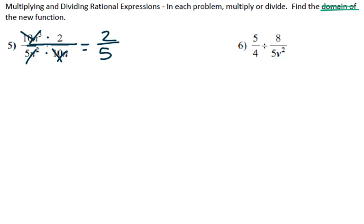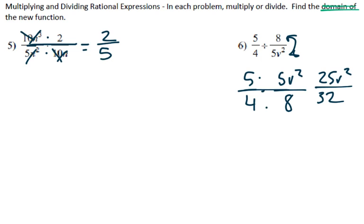And number 6, with division we have to get the reciprocal of the second, and then we can multiply. We can't start canceling it out yet, so then we end up with 25v² over 32, which we can't simplify that, so we leave it how it is.